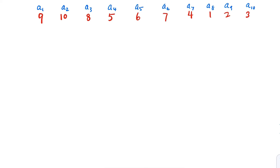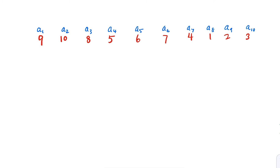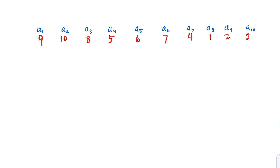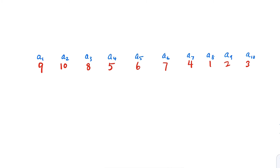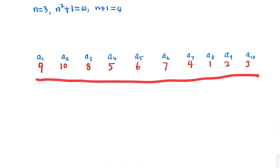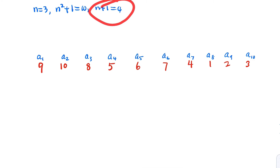For example, consider a 10-element sequence from a1 to a10. How do we find n here? n would be 3, so n equals 3. Then n squared plus 1 equals 10, and n plus 1 equals 4. The statement says for a sequence of 10 elements, we can always find a 4-element subsequence that is strictly increasing. Let's try that.